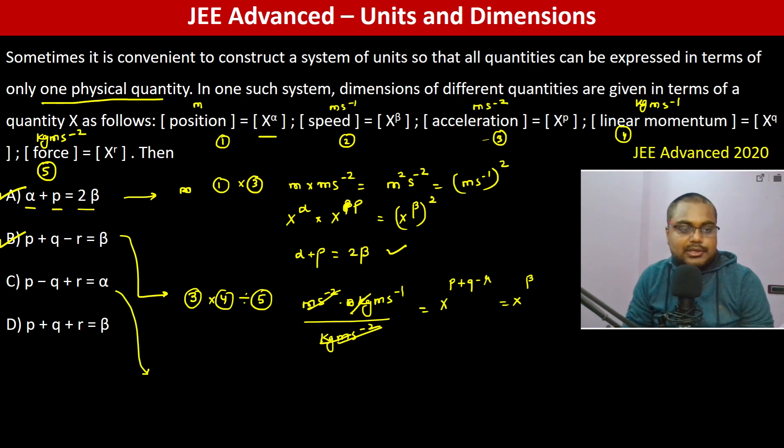Third one: p minus q plus r equals alpha. So 3 divided by 4 into 5. Meter per second squared into kg ms⁻² divided by kg ms⁻². Kg is gone, ms⁻¹ goes up.